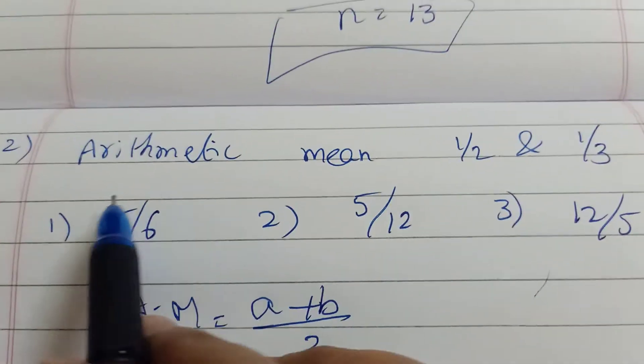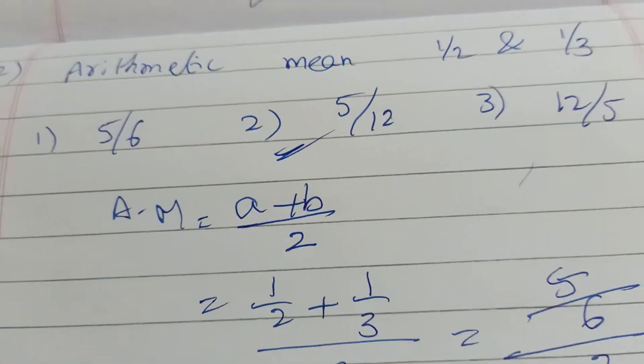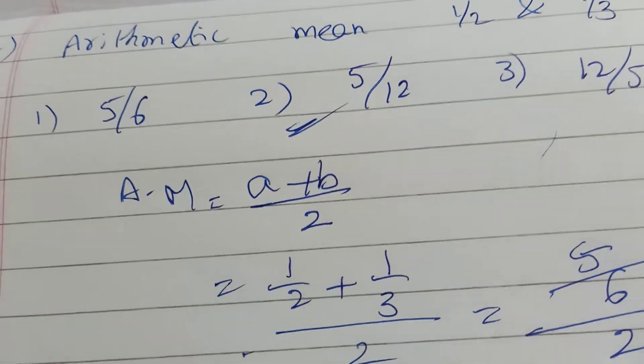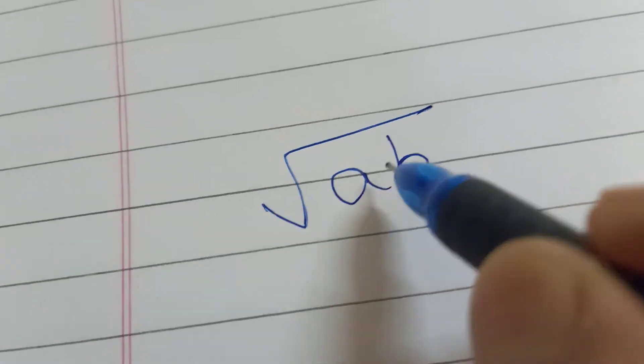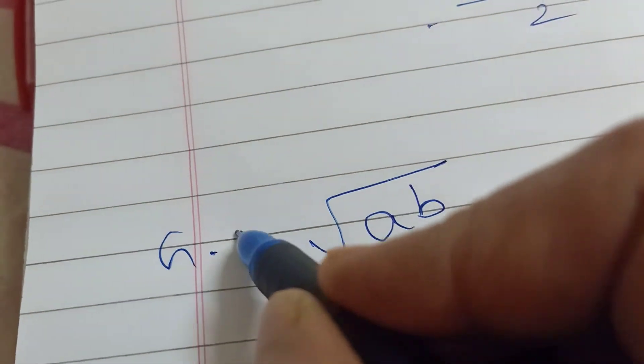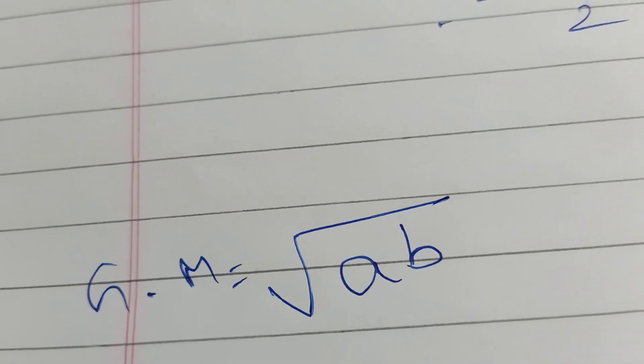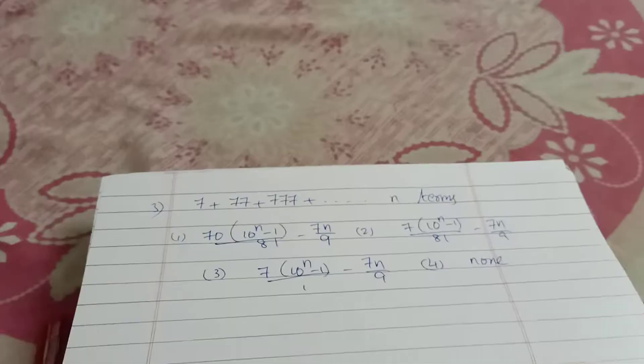The arithmetic mean formula is a plus b by 2. Suppose you need the geometric mean, GM. What is the formula? GM is root AB. For arithmetic mean, it's a plus b by 2. For two terms in geometric progression, the geometric mean is root AB.